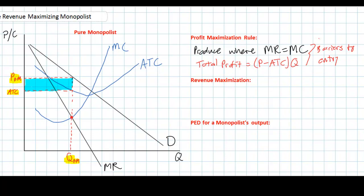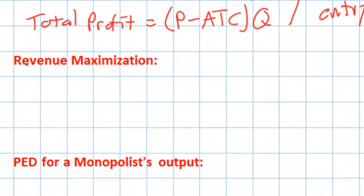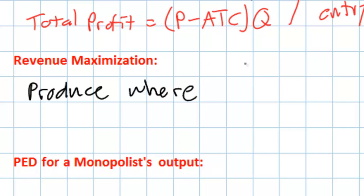Next we're going to talk about the level of output a firm would wish to produce at in order to maximize its revenues. We don't typically think of firms as revenue maximizers — we think of them as profit maximizers. But what if a firm decided its objective was not the greatest level of profits but the highest revenues possible, even if that meant total profits would be less than at the MC equals MR point? If a firm wants to maximize its revenues it should produce at the quantity where marginal revenue equals zero.